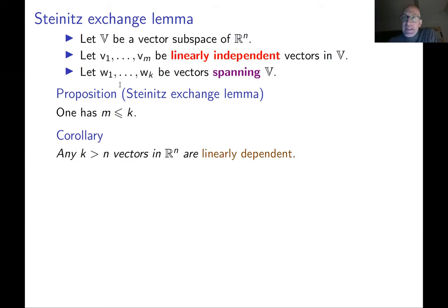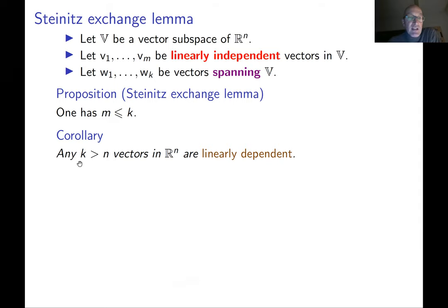This lemma immediately gives us a very nice corollary: if you have k vectors in n-dimensional space R^n, and k is larger than n, then they are automatically linearly dependent. Because we already know that the standard vectors e1, e2, en span R^n, applying the Steinitz Exchange Lemma shows that if you have k vectors in this space with k bigger than n, they must be linearly dependent.